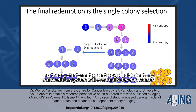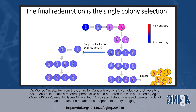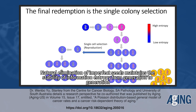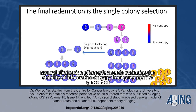This theory of information entropy predicts that any multicellular system will eventually develop cancer. The only way to overcome this limitation is through single-colonial selection, and the process of reproduction is just such a form of single-colonial selection. Natural elimination of imperfect seeds maintains the stability of information entropy from generation to generation.